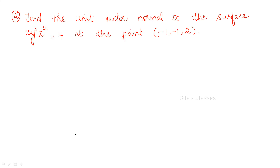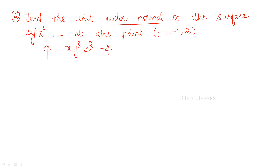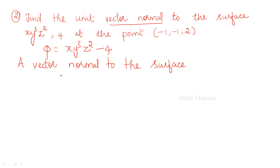Next question: Find the unit vector normal to the surface xy³z² = 4 at the point (−1, −1, 2). The gradient gives the vector normal to the surface. So let phi = xy³z² − 4, where phi(x,y,z) = c. A vector normal to the surface is given by del phi: i·(∂φ/∂x) + j·(∂φ/∂y) + k·(∂φ/∂z), which gives y³z²·i + 3xy²z²·j + 2xyz³·k.